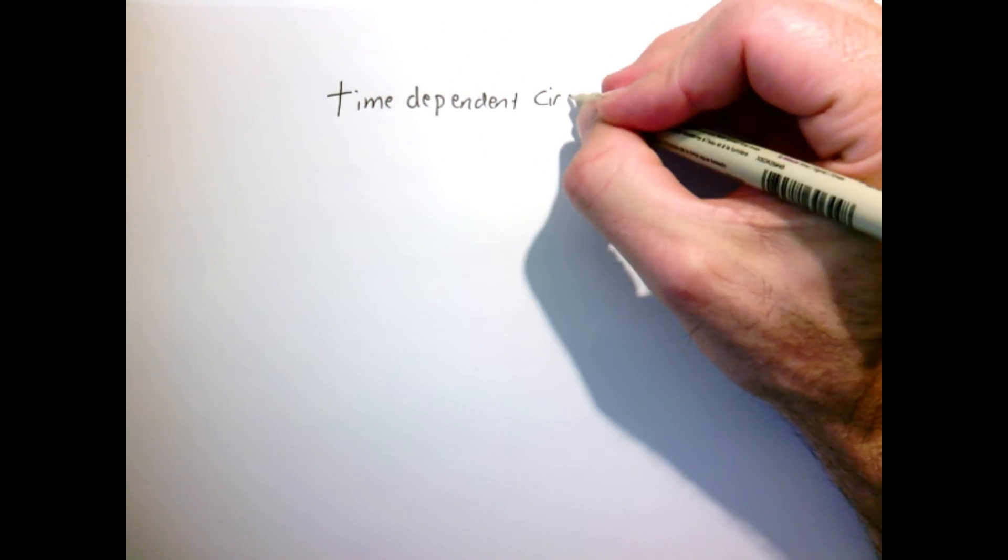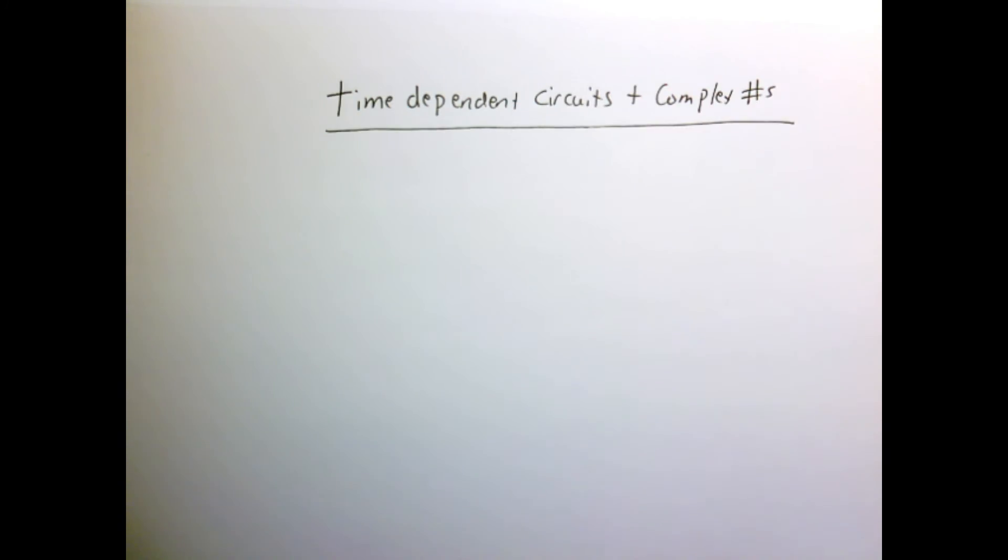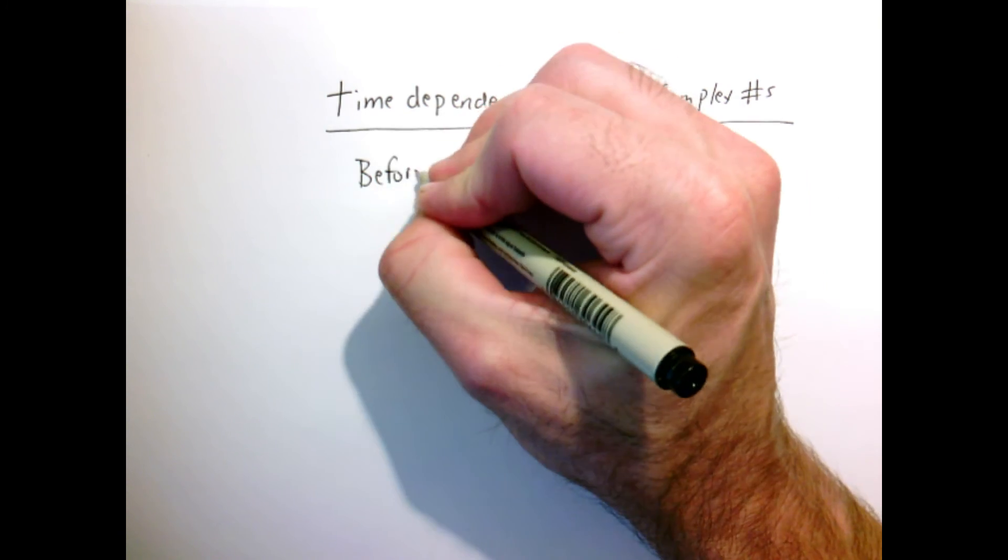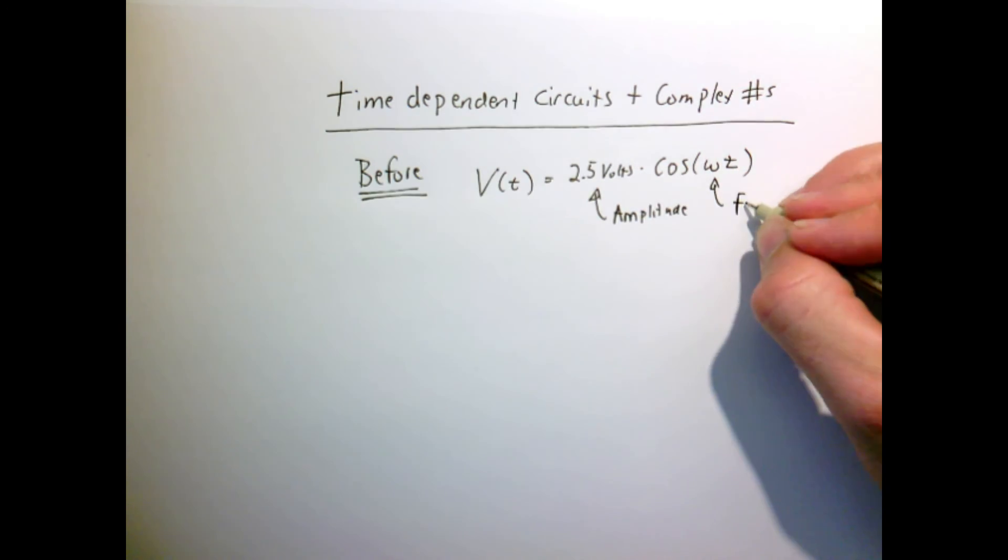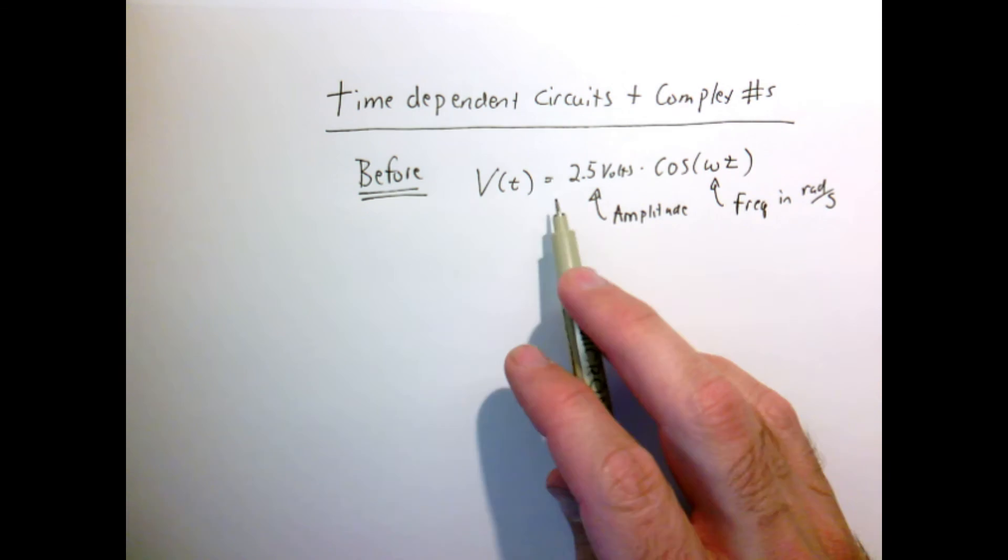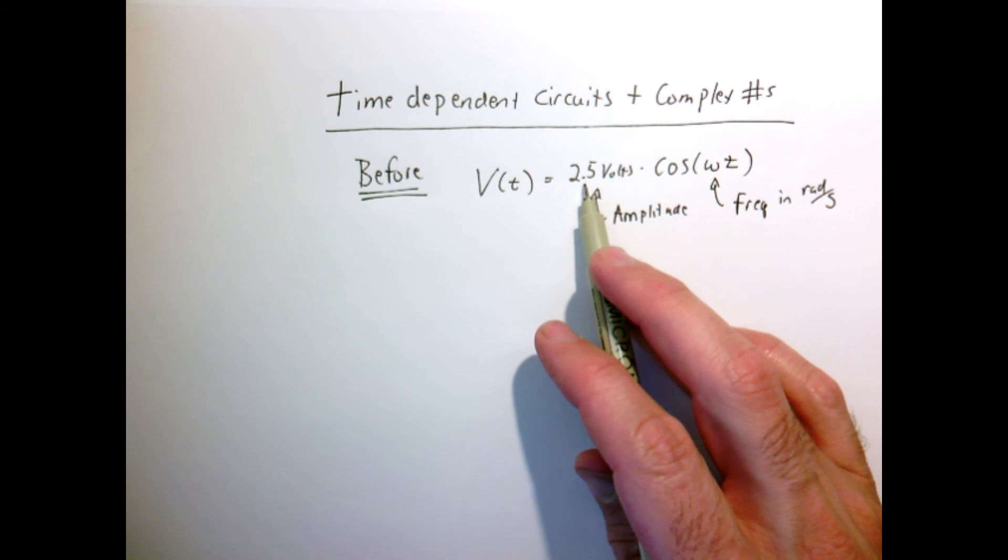Now let's see how we can use complex numbers to analyze time-dependent circuits. When we analyzed time-dependent circuits in earlier videos, we used a form where we'd say that some voltage as a function of time is equal to...